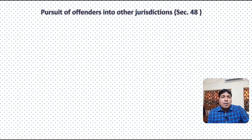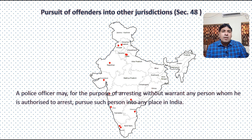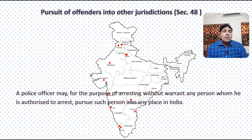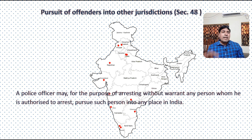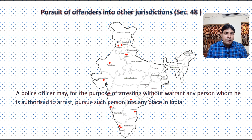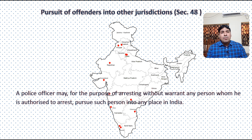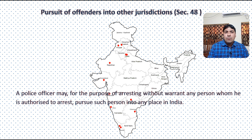Section 48 deals with Pursuit of Offender into Other Jurisdiction. A police officer may, for the purpose of arresting without warrant any person whom he is authorized to arrest, pursue such person into any place in India. So if the accused has committed a cognizable offense, for the purpose of arresting the accused person, the police officer can move throughout India for the purpose of effecting the arrest. Section 48 police officer ko power deta hai ki wo poore India mein kahi par bhi accused person ka peecha kar sakti hai aur arrest kar sakti hai.